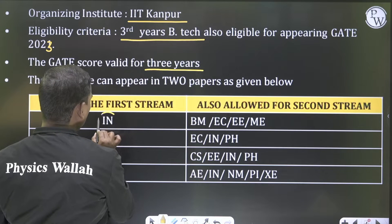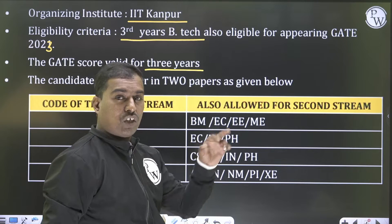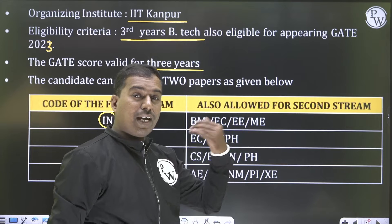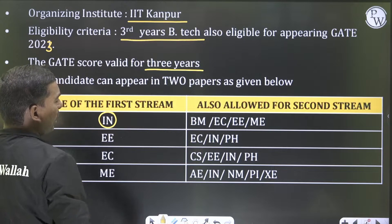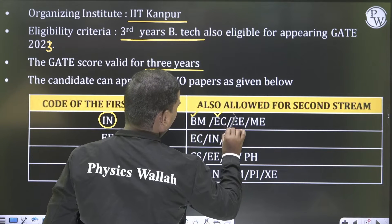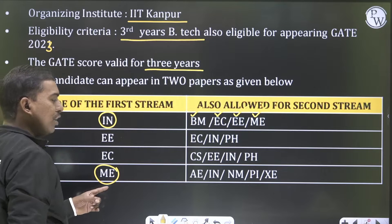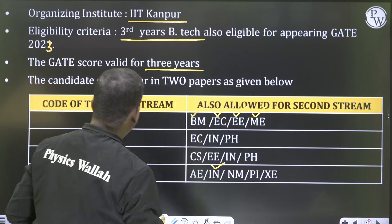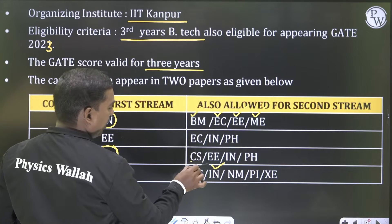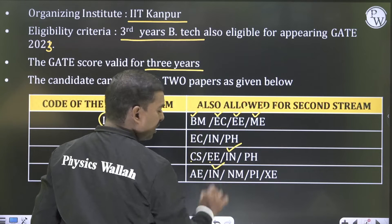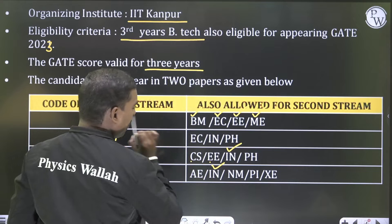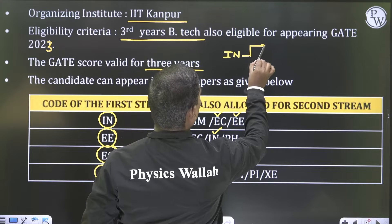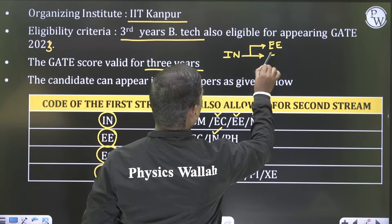Instrumentation students can write instrumentation as option number one. They are also allowed a second stream — instrumentation students can write biomedical, ECE, electrical, and mechanical papers. Mechanical engineering students can write instrumentation paper as option two. ECE, NM, PX students can write computer science, electrical, instrumentation, and physics as option two. Electrical students can also write ECE and instrumentation paper as option two.